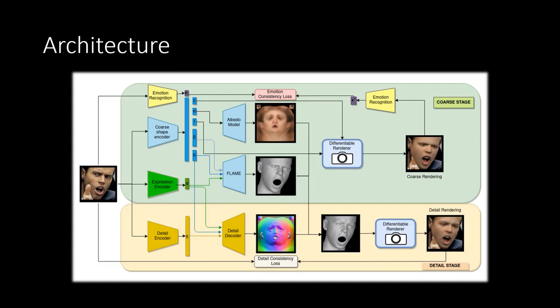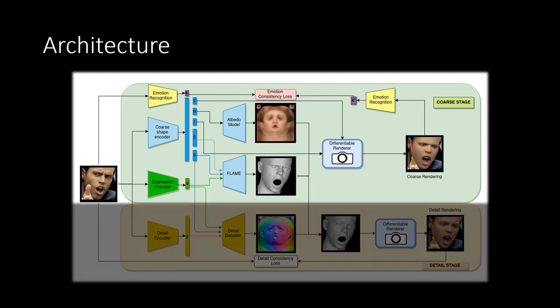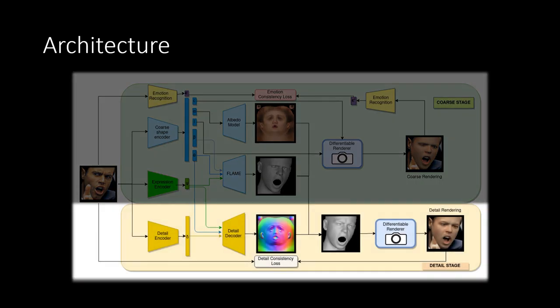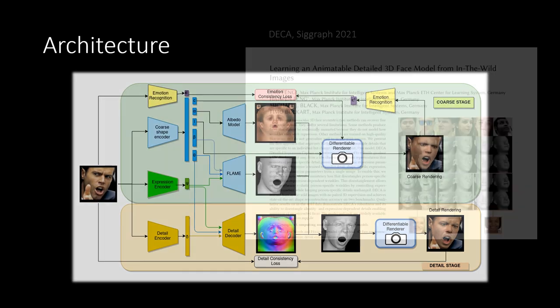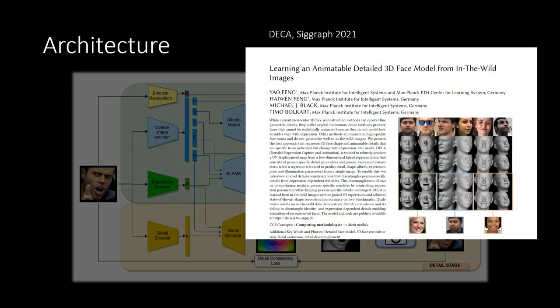Our model consists of two parts: a coarse stage to reconstruct a coarse proxy geometry, and a detail stage to model expression-dependent details. EMOKA builds on top of DECA, a publicly available 3D face reconstruction framework.